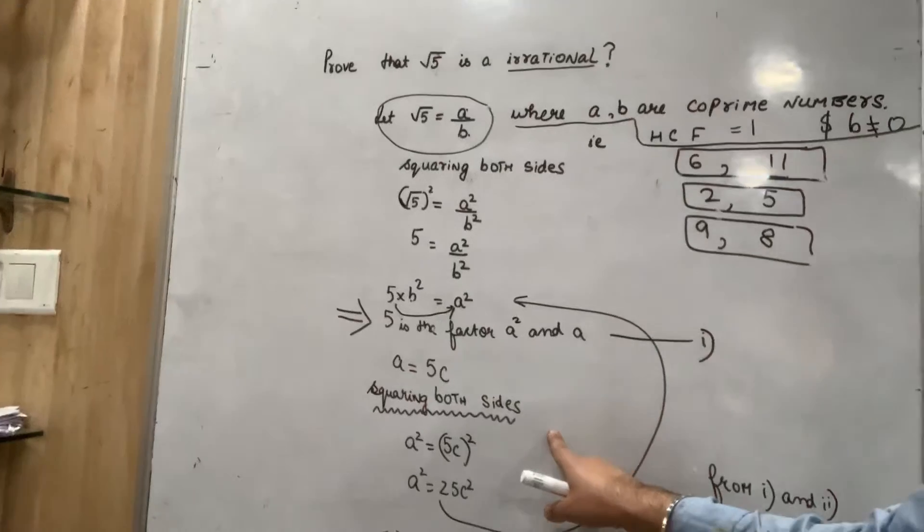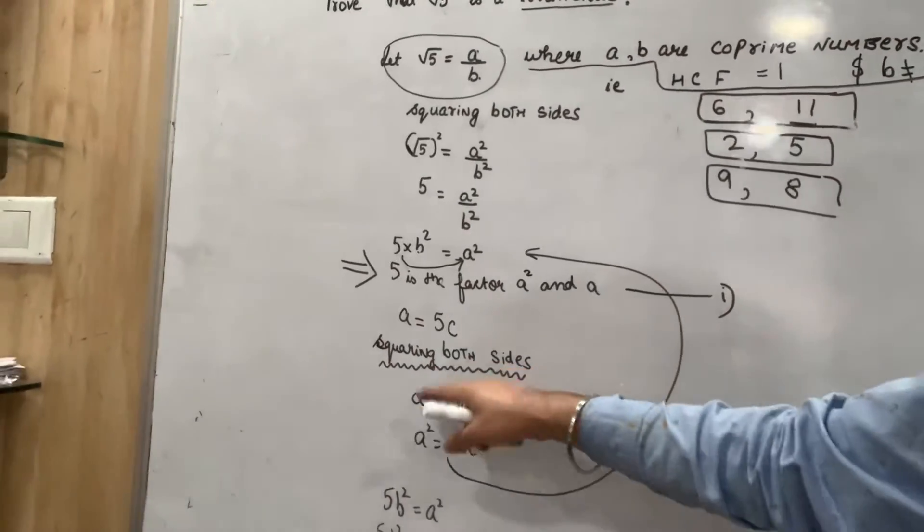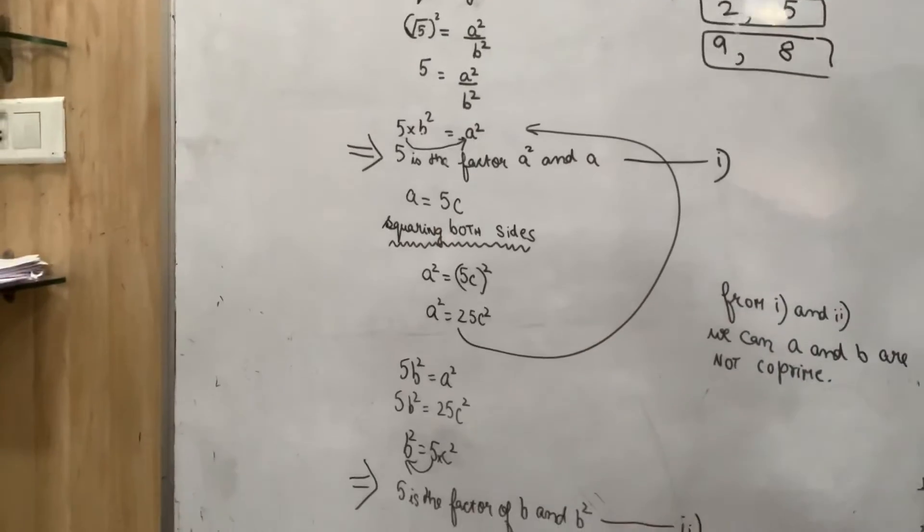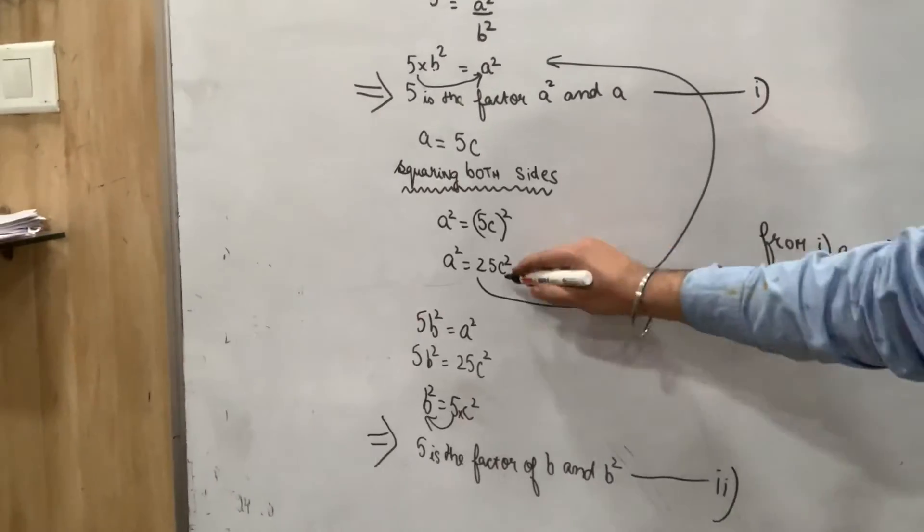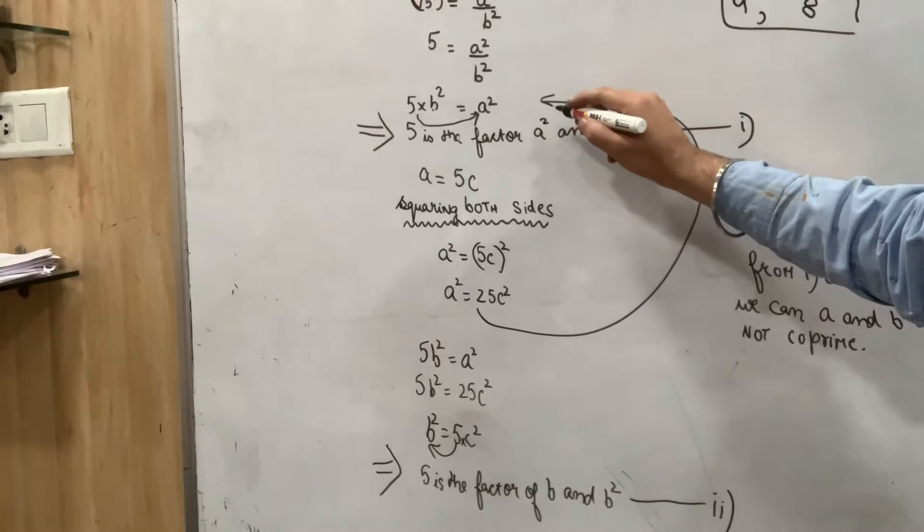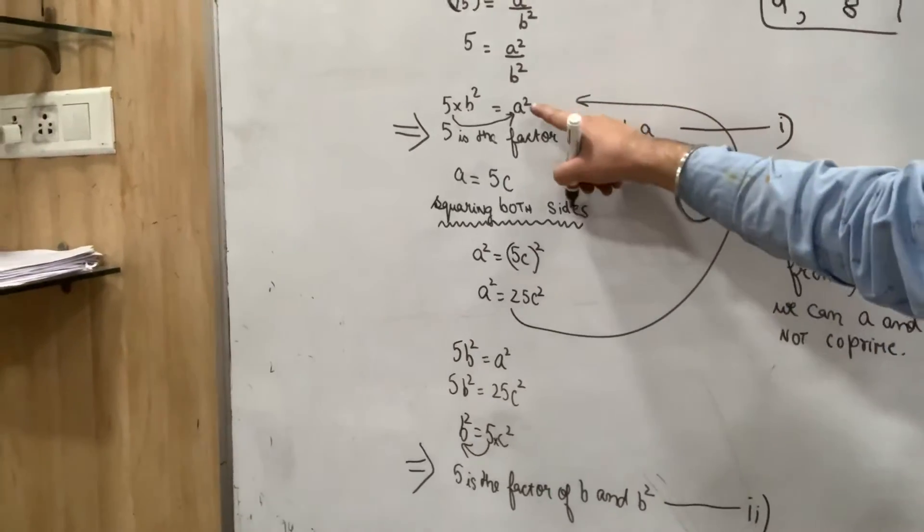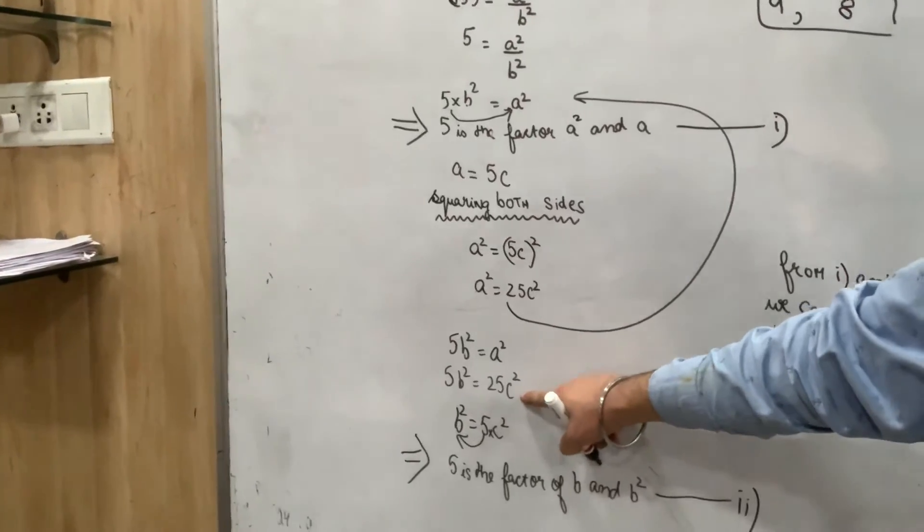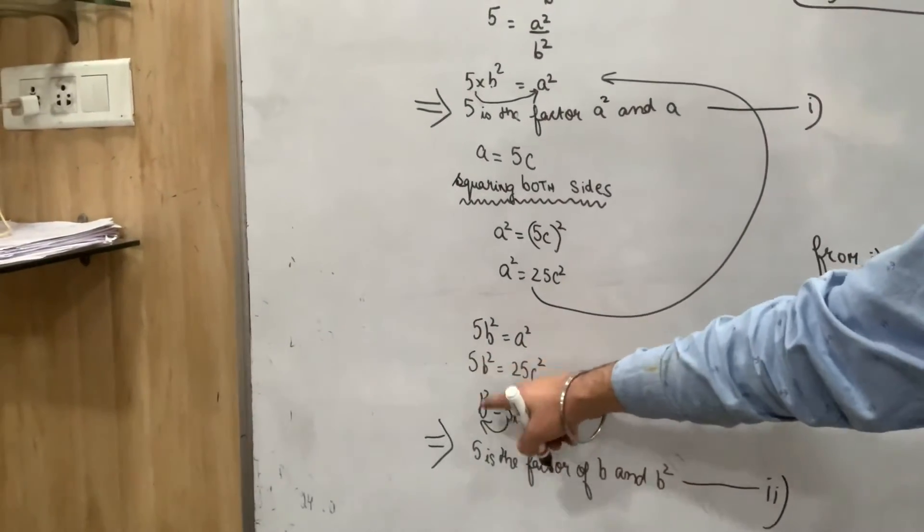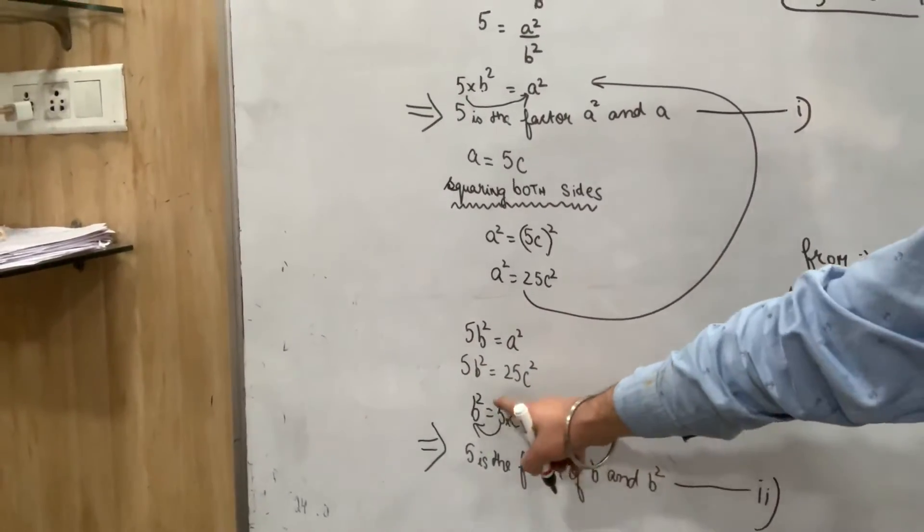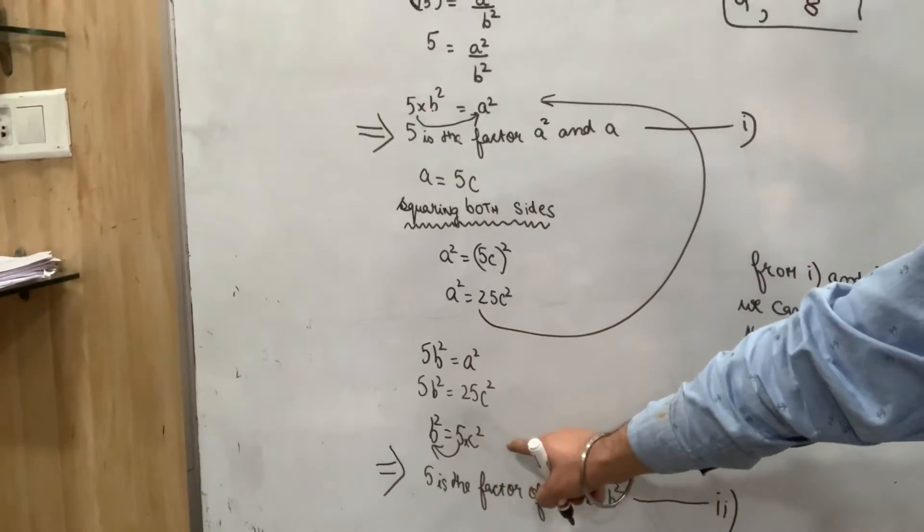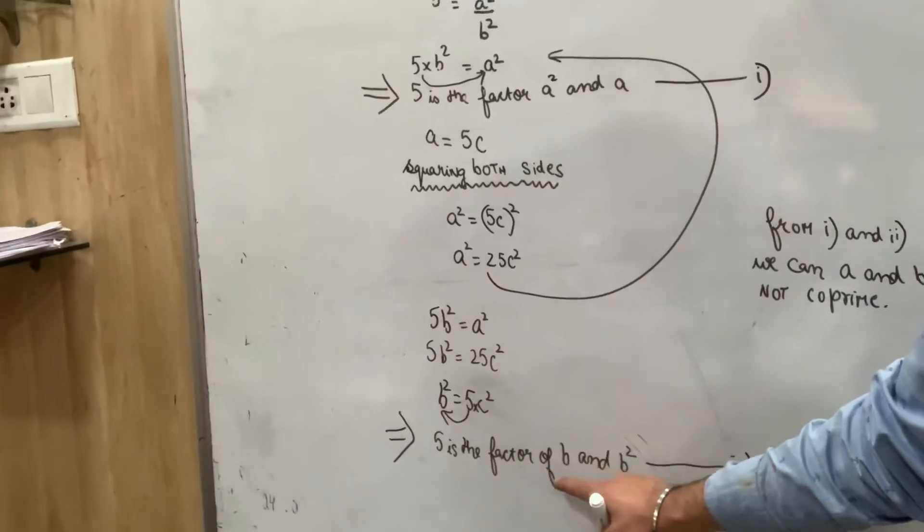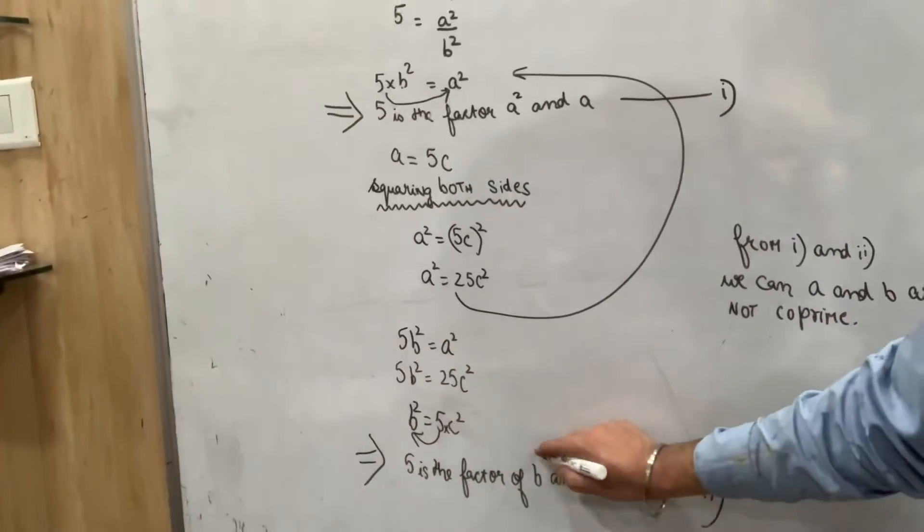Squaring both sides, 5 equals a² over b², so b square is equal to 5 into c square. This means 5 is the factor of b square and b.